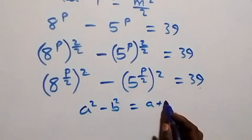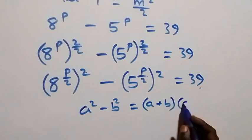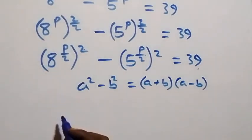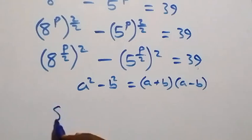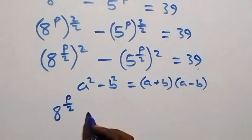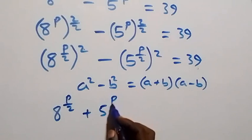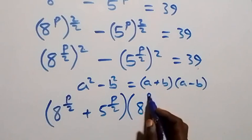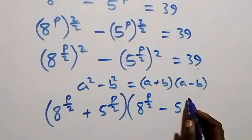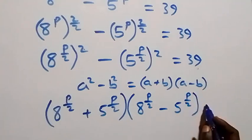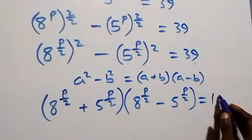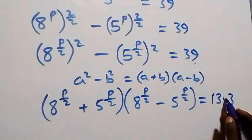This follows the pattern a squared minus b squared, which can be written as (a + b)(a − b). Here a stands for 8 raised to power p over 2 and b stands for 5 raised to power p over 2. So it becomes: (8 raised to power p over 2 plus 5 raised to power p over 2) times (8 raised to power p over 2 minus 5 raised to power p over 2) equals 39.